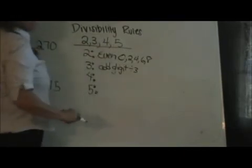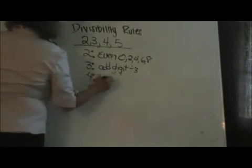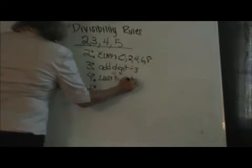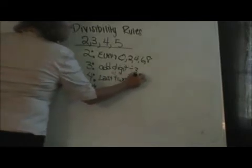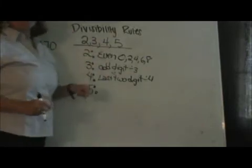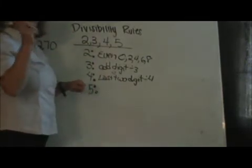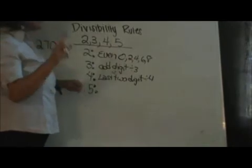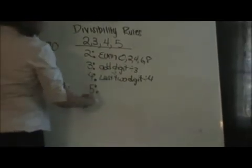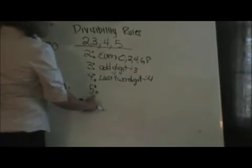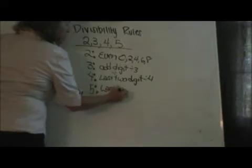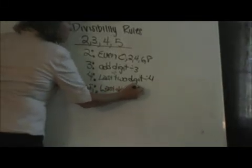Divisibility rule of 4: we are going to look at the last two digits. If the last two digits are divisible by 4, then the number is divisible by 4. I also have another trick for divisibility of 4 — if you divide by 2 and the answer is even, then the original number is divisible by 4. And the final one is 5.